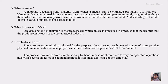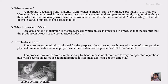The third question is: how do we dress an ore? There are several methods adapted for the purpose of ore dressing. Each method takes advantage of some peculiar physical, mechanical, and chemical property, or a combination of properties of the ore mineral. This ore dressing process is adopted according to the physical, chemical, mechanical, or combined properties of the ore mineral to separate it from the gang minerals.